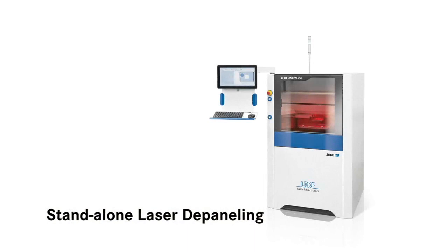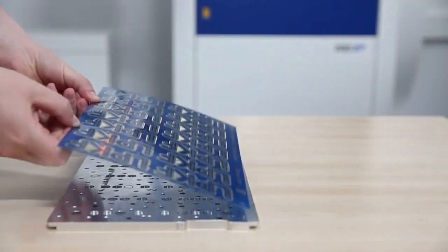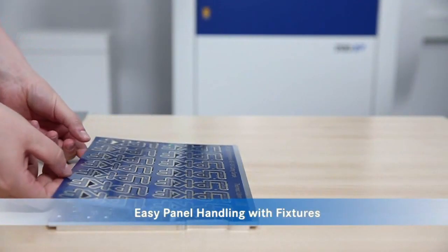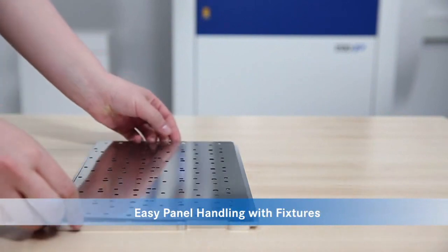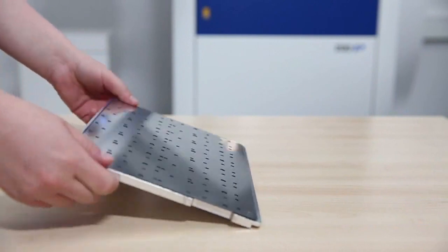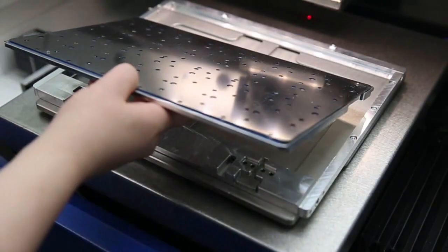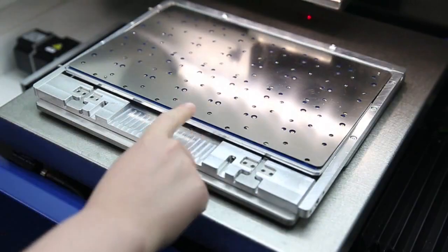The stand-alone, manually loaded MicroLine 2000 S model has been designed for the depaneling of populated PCB panels with the use of a simple carrier fixture. This S model is capable of performing both full perimeter cuts of the board outline or for the cutting of pre-routed breakout tabs.